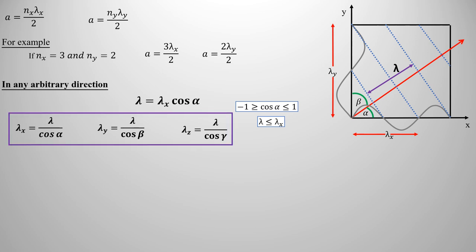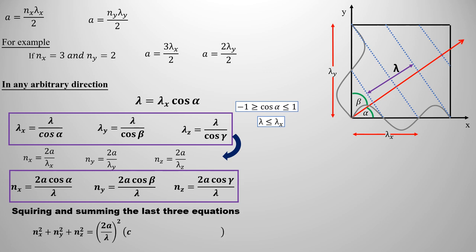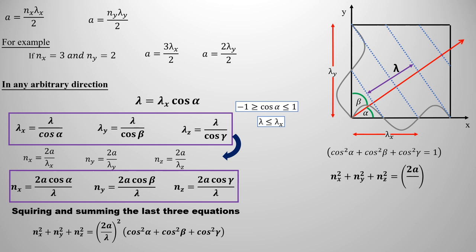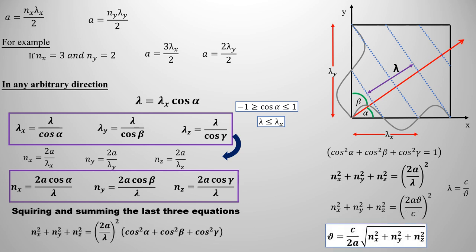Now, if we put the values of lambda_x, lambda_y, and lambda_z into the equation for number of modes, we get the generalized equation for n_x, n_y, and n_z. Squaring all three equations and summing them: n_x squared plus n_y squared plus n_z squared equals (2a / lambda) squared times (cos²alpha + cos²beta + cos²gamma). From the Pythagorean theorem, cos²alpha + cos²beta + cos²gamma equals 1, so n_x² + n_y² + n_z² equals (2a / lambda)². Replacing wavelength with frequency nu, this becomes (2a·nu / c)². Rearranging, frequency nu equals c divided by 2a times the square root of (n_x² + n_y² + n_z²).